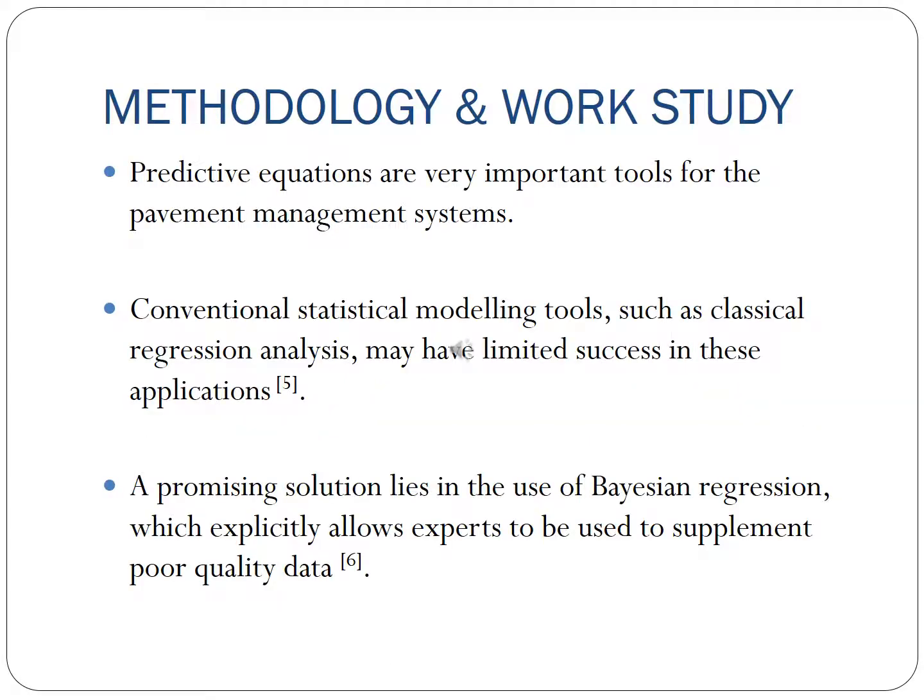Predictive equations are very important tools for pavement management systems. However, databases to support the development and updating of these models are lacking. These databases are often inadequate in sample size, noisy, or incomplete. Conventional statistical modeling tools, such as classical regression analysis, may have limited success in these applications. A promising solution lies in the use of Bayesian regression, which explicitly allows experts to supplement poor quality data. The Bayesian regression methodology was adopted by the Canadian Strategic Highway Research Program for the Canadian Long-Term Pavement Performance Monitoring Program.